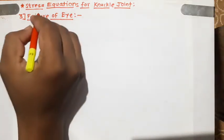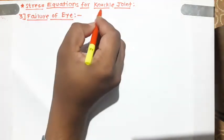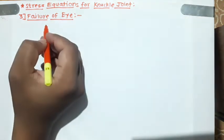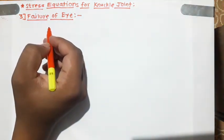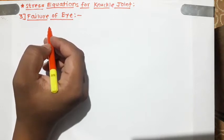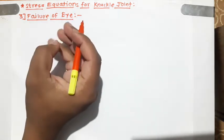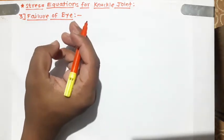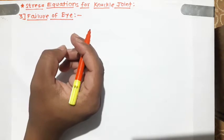Welcome to the next video on stress equations for knuckle joint. In the last lecture we discussed the stress equations for rod and pin. The rod failed under tensile stress, and the pin failed under: first, double shear stress; second, crushing stress; and lastly, bending stress.